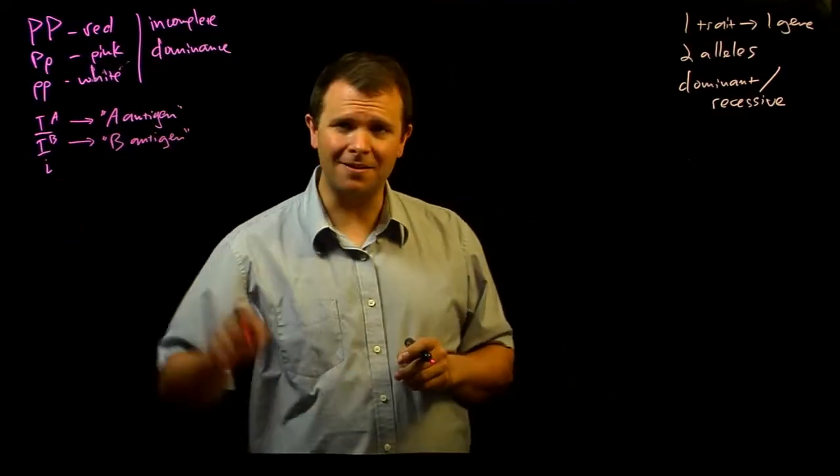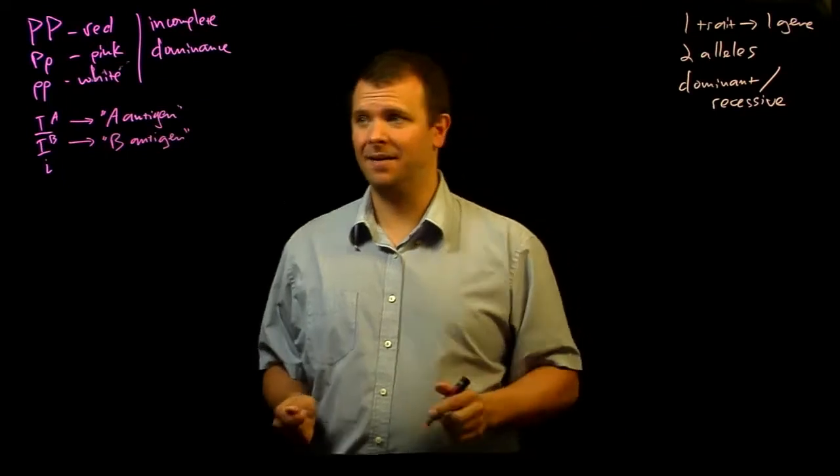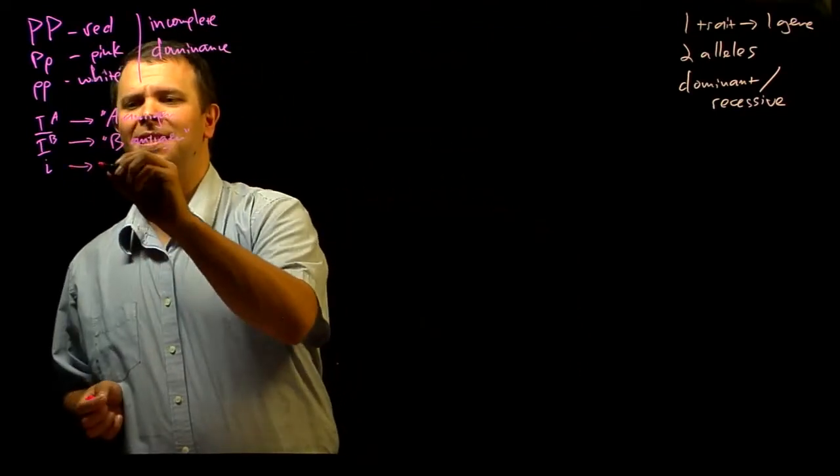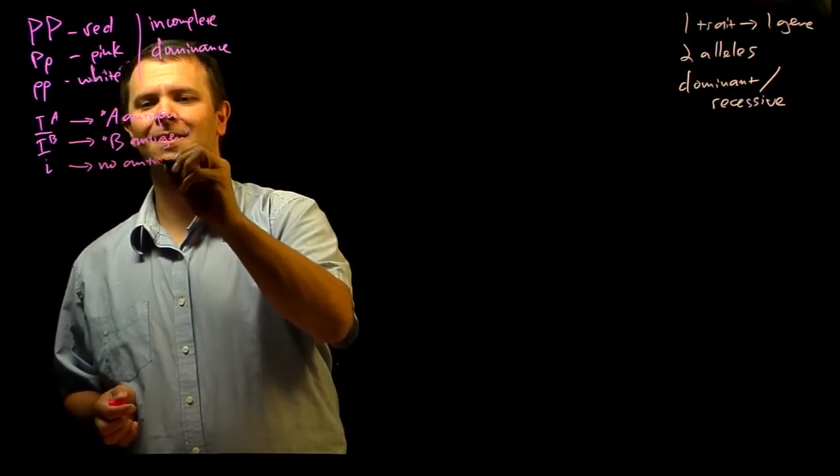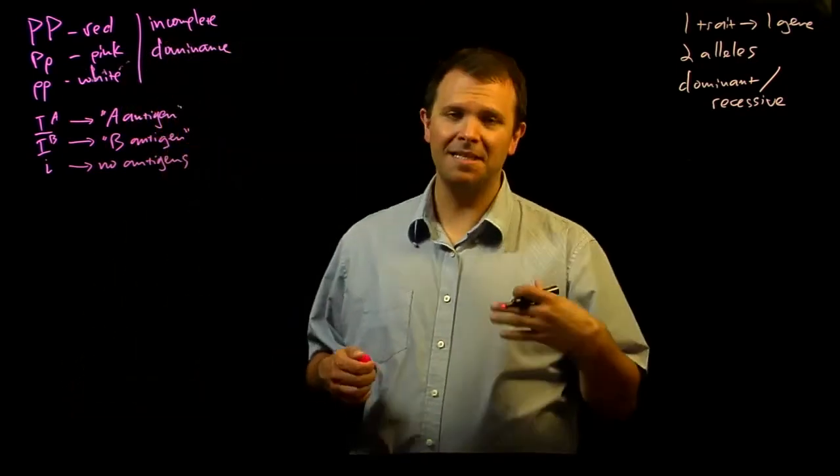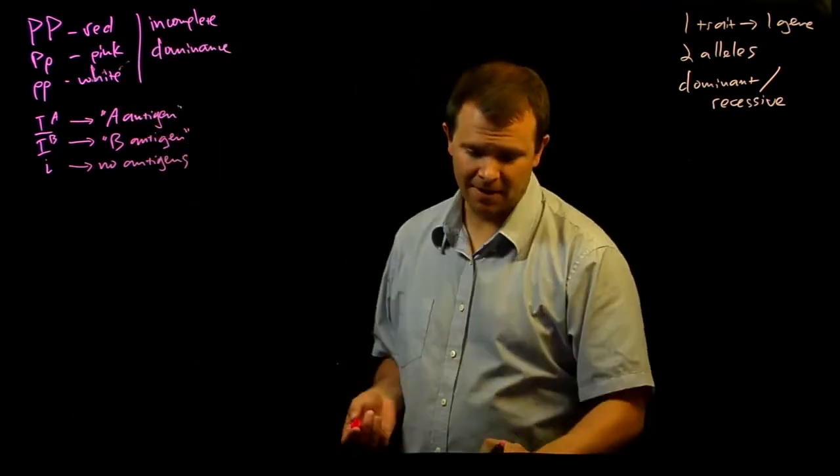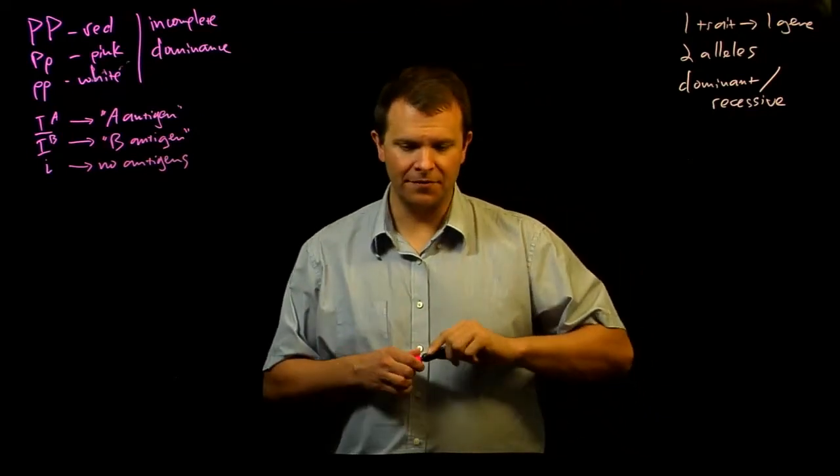And the little i allele is a non-functional enzyme. And so this produces no antigens. It does not modify those polysaccharides on the outside of the red blood cell.